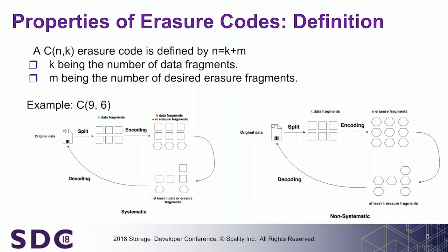You have two main types of codes. For instance, a C(9,6) code: you have your data that you split into six fragments, and you generate three additional fragments, so nine fragments in total — called C(9,6). There is another type called non-systematic, where you actually generate nine coding fragments and obfuscate the data. In any case, you need typically K data fragments to recover. For example, if we lost two data fragments and one coding fragment but still have six, we are able to decode. The main drawback of non-systematic code is that even if you are retrieving K fragments, you need to decode.